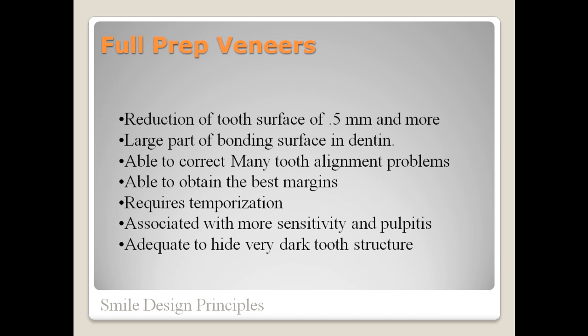Full prep veneers require a reduction of tooth structure of about half a millimeter and more, which means you may be bonding mostly to a dentinal surface. You will be able to correct many crowding and tooth alignment problems and get the best margins due to the greater amount of reduction possible. You also need to fabricate good temporaries to avoid sensitivity, and the greater amount of reduction allows you to mask dark teeth adequately.